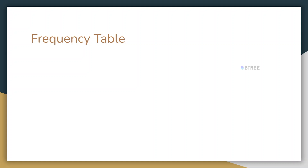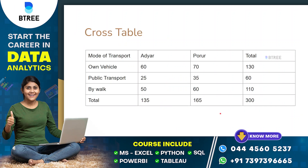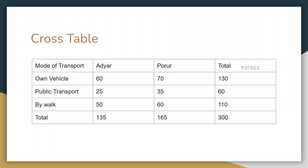That's why we use this frequency table. There are 150 members total. For public transport, there are 50 names and 65 members — this is the frequency table. For the cross table, let's take two schools with two locations — I can see there is an extra column for the total.